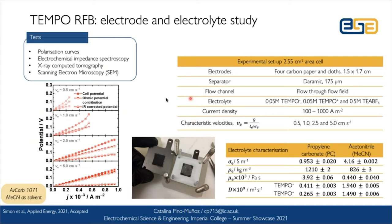We do a series of experimental tests, this time for a 2.5 cm² cell with a range of current densities. We obtain electrolyte characterization for two different supporting solvents. I have an example of the polarization data we obtained, where we can decouple from the cell potential the ohmic contribution and the IR-corrected potential. The system has fast kinetics, so this IR-corrected potential will primarily represent the mass transfer limitation in the system.